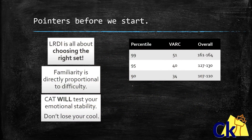Here are certain pointers before we start. LRDI is all about choosing the right set. It is all about figuring out, out of the 8 sets, which are the easy ones — do them first, then move on to the medium ones, and then out of the difficult or leftover sets try to do a few questions here and there.